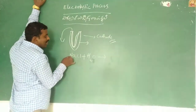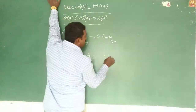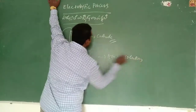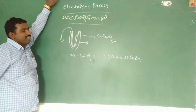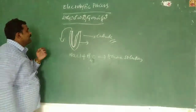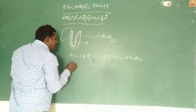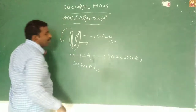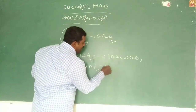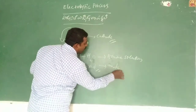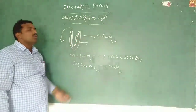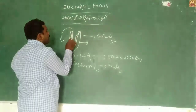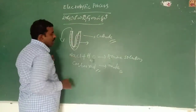This U-type vessel is filled with a brine solution. Brine solution means water with dissolved sodium chloride — that is, sodium chloride solution dissolved in water. Into this U-type vessel, a carbon rod is dropped in, and this carbon rod will act as an anode.